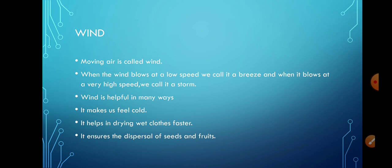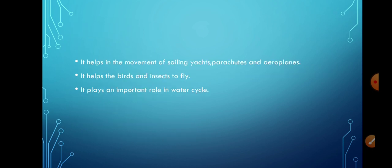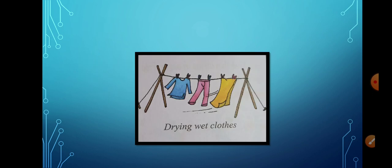Wind is helpful in many ways. The clothes, they get dried up with the help of wind. It makes us feel cold. It helps in drying the wet clothes faster. It ensures the dispersal of seeds and fruits. It also helps in the movement of sailing yachts, parachutes and aeroplanes. It also helps in the movement of birds and insects. And it plays an important role in water cycle.